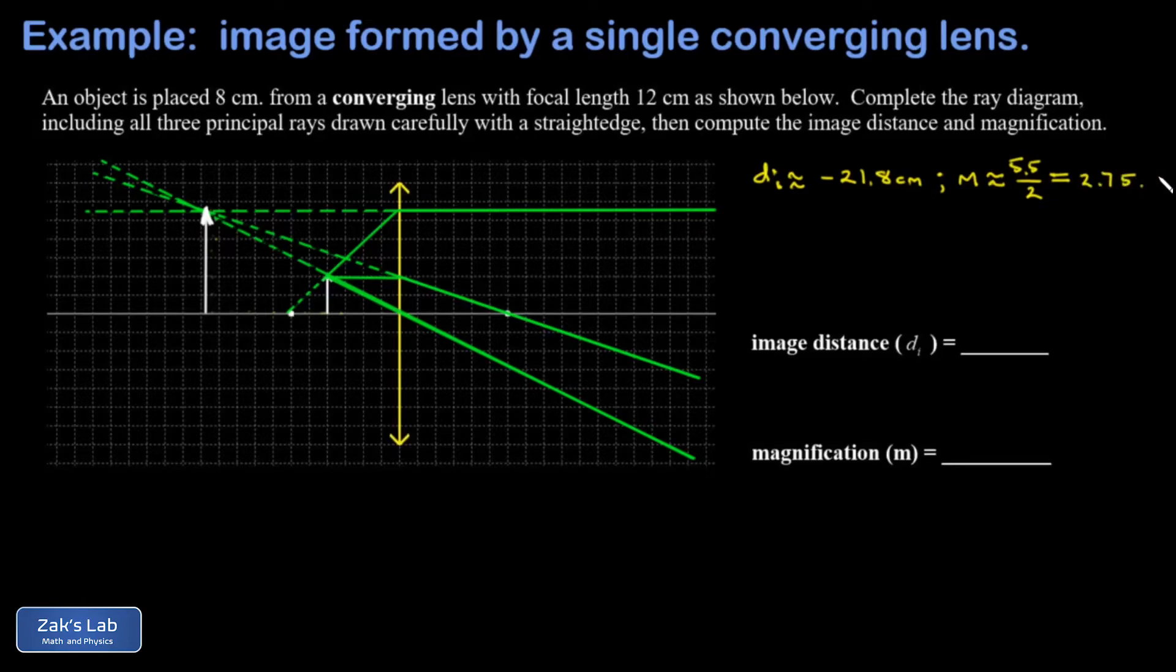Now, of course, we can get the precise answers by using the thin lens equation and the magnification equation. So I have 1 over DI plus 1 over DO equals 1 over F. That means 1 over my image distance is going to be 1 over the focal length, that's 1 over 12, minus 1 over the object distance or 1 over 8.